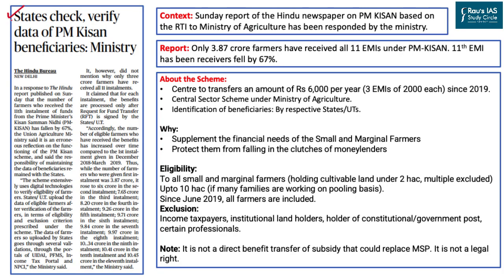The lead article for today's discussion was published on page 12 of The Hindu newspaper. This article goes against a report published in The Hindu on Saturday regarding the performance of Pradhan Mantri Kisan Samman Nidhi or PM Kisan. The report was based on an RTI filed to the Ministry of Agriculture, which responded that the report is partially true. The RTI report says only 3.87 crore farmers received all 11 EMIs under PM Kisan Yojana, and the 11th EMI receivers fell by 67%, which is a sign of grave concern.